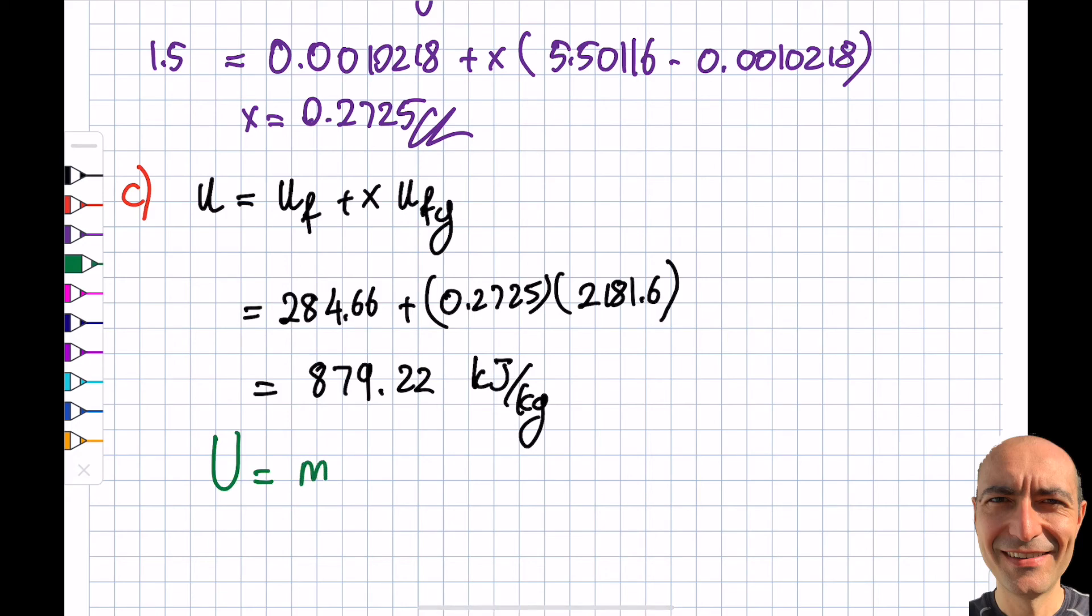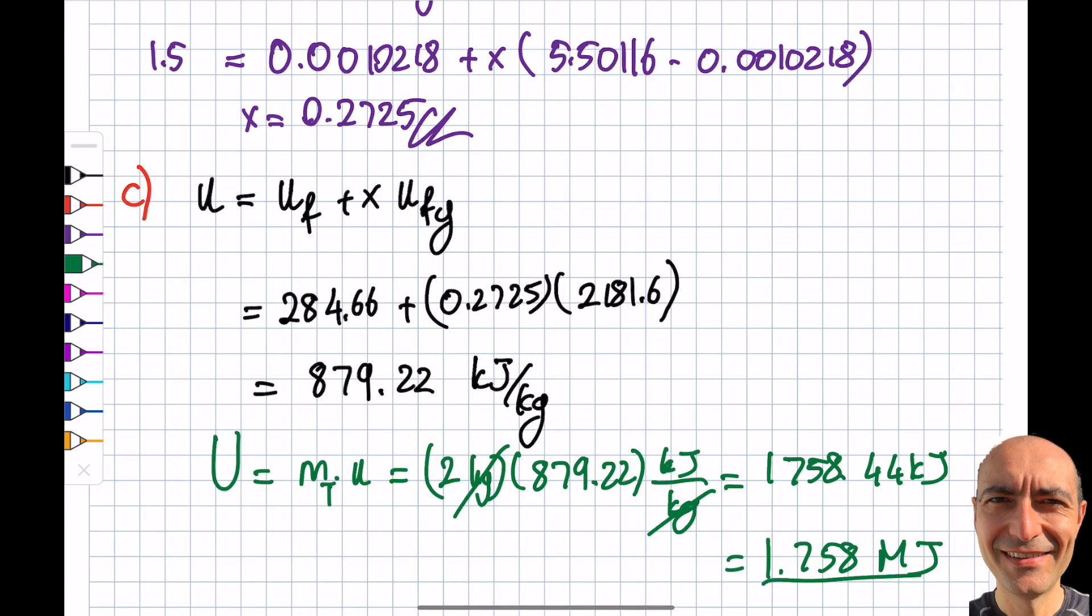So then I have to do this. This is going to be M total times U. And mass, it was 2. So then it will be 2 kg times 879.22 kJ/kg. Kilograms cancel. I will get myself 1758.44 kJ or in terms of writing 1.758 megajoules. That is the energy that is contained in my system that I can tap into. All right. Thank you for watching this segment as well. Have a good day.